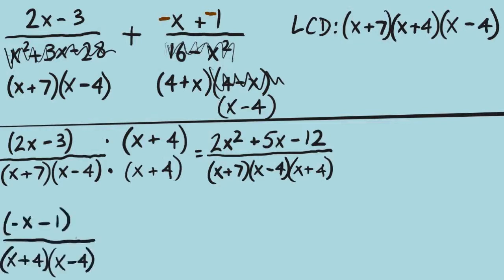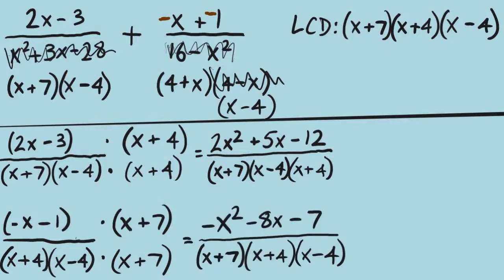Let's take our second fraction — bringing down the minus (x + 1) over (x + 4)(x − 4). I wrote it as x plus 4 to match the LCD, since we traditionally see the variable first. What is missing from our denominator? The x plus 7. Multiply that to top and bottom; it lines up in the denominator in factored form. For the numerator, FOIL: negative x times x is negative x squared; negative x times positive 7 and negative 1 times x together make negative 8x; and negative 1 times positive 7 is negative 7.